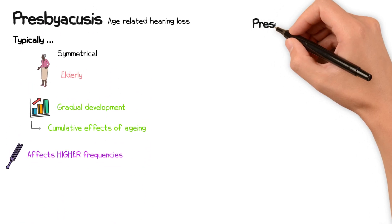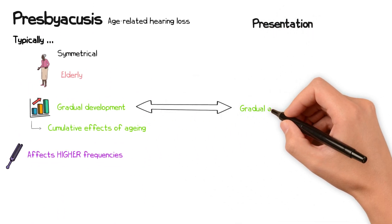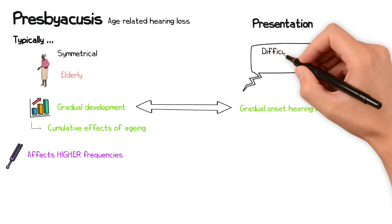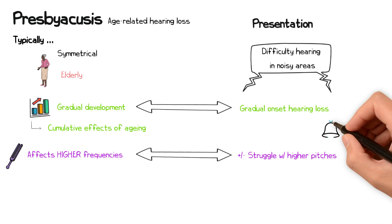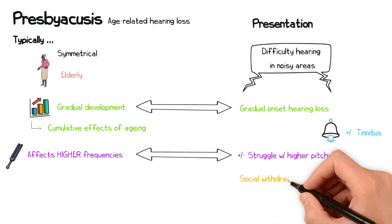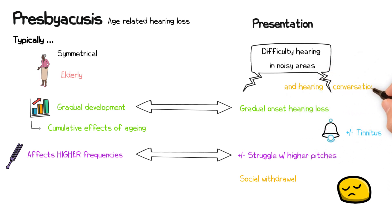Patients with presbyacusis typically present with gradual onset hearing loss, with difficulty hearing in noisy environments. They may struggle with high-pitched sounds and they may develop tinnitus. Importantly, the patients may present with social withdrawal and avoid social situations because they struggle to follow conversations. This can lead to isolation and depression and there is a strong relationship between hearing loss and cognitive decline.